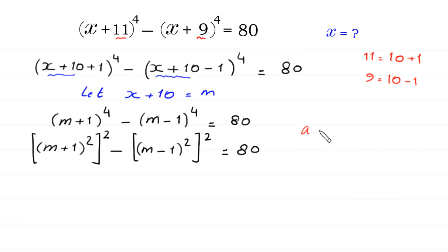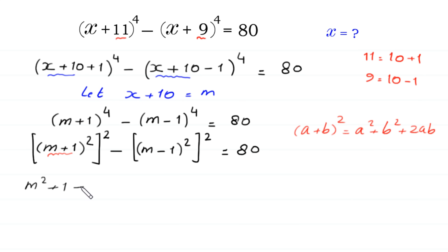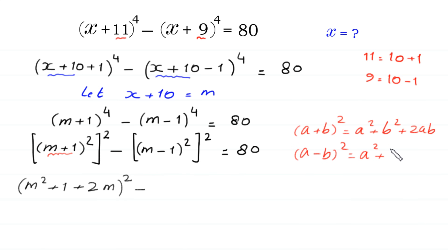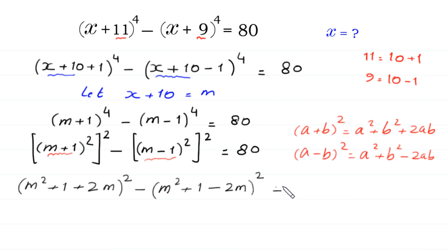According to the algebraic identity, a plus b whole square equals a squared plus b squared plus 2ab, so m plus 1 whole square equals m squared plus 1 plus 2m. And using a minus b whole square equals a squared plus b squared minus 2ab, m minus 1 whole square equals m squared plus 1 minus 2m. So we have m squared plus 1 plus 2m, whole squared, minus m squared plus 1 minus 2m, whole squared, equal to 80.